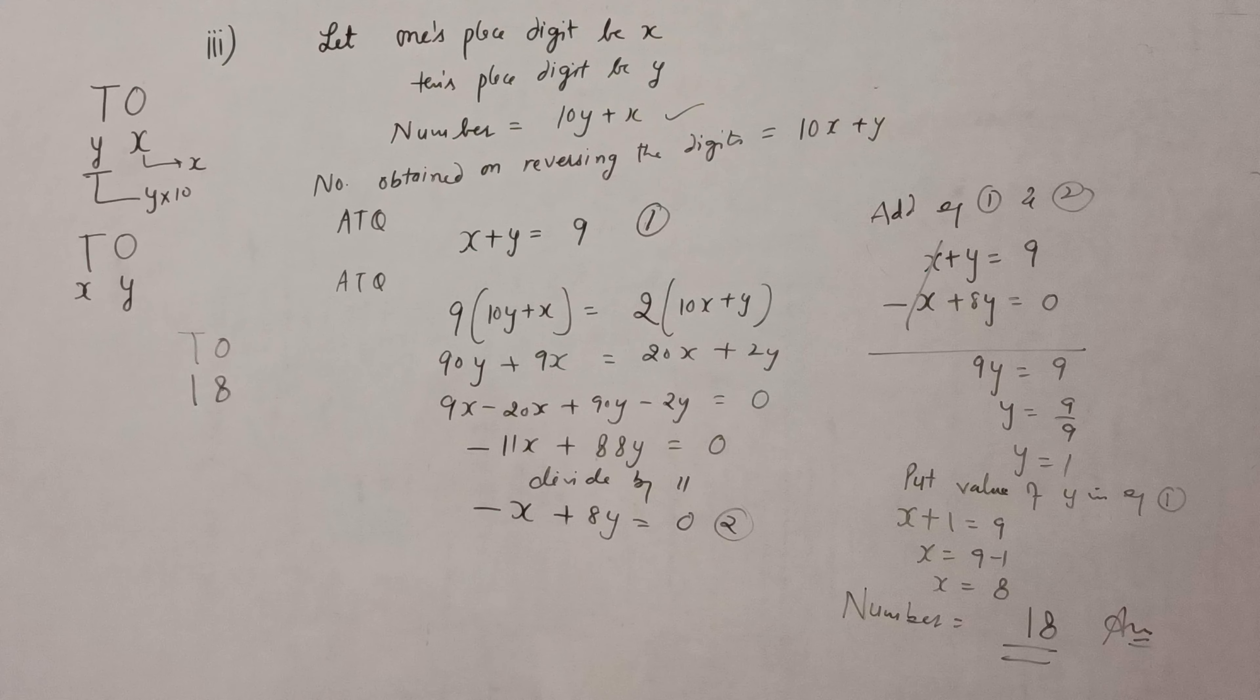Now we will solve these two equations by elimination method. You can see x and it is minus x. Both variables have different signs, so we simply add equation 1 and 2. If both equation variables have the same sign, then we will add.